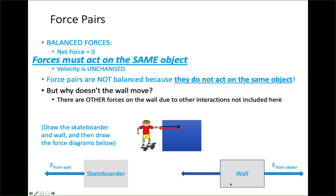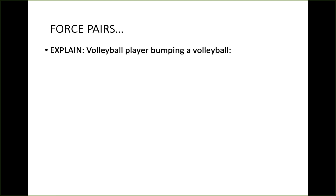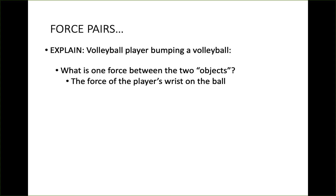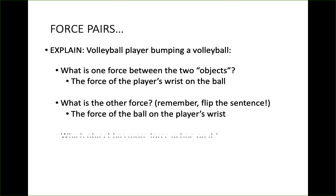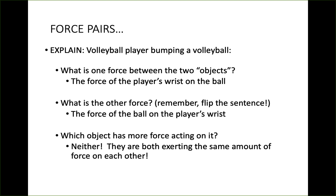While they may seem like they might balance, they do not cancel because they act on two separate objects. The force from the wall acts on the skateboarder; the force from the skateboarder acts on the wall. One final example: a volleyball player bumping a volleyball — the force of the player's wrist on the ball is one force, and the force of the ball on the player's wrist is the other. Which object has more force? Neither — they are both exerting the same amount of force on each other.